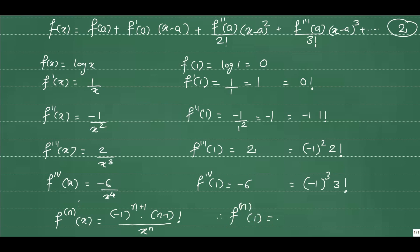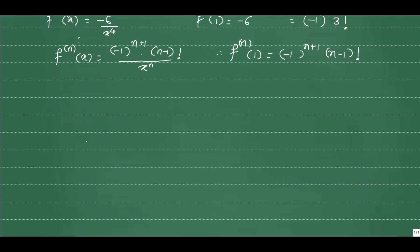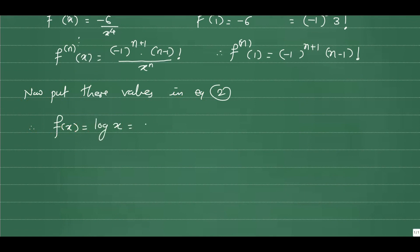So now we have all the values: f(1), f'(1), f''(1), f'''(1), and so on. Let's put all these values into equation number 2 to get the Taylor series representation of log(x). So f(x) = log(x) = f(1) + f'(1)·(x-1) + ..., where f(1) = 0 and f'(1) = 1.